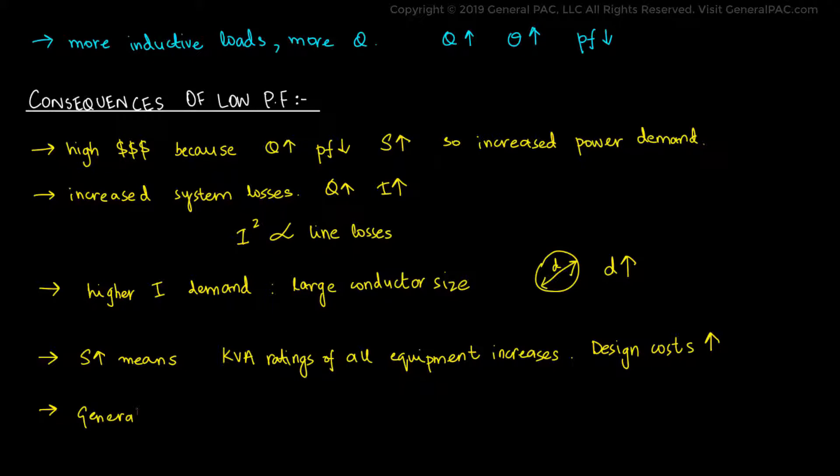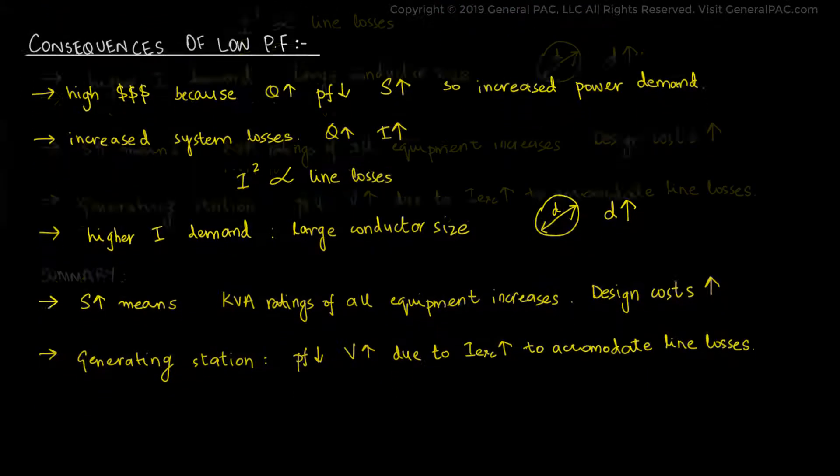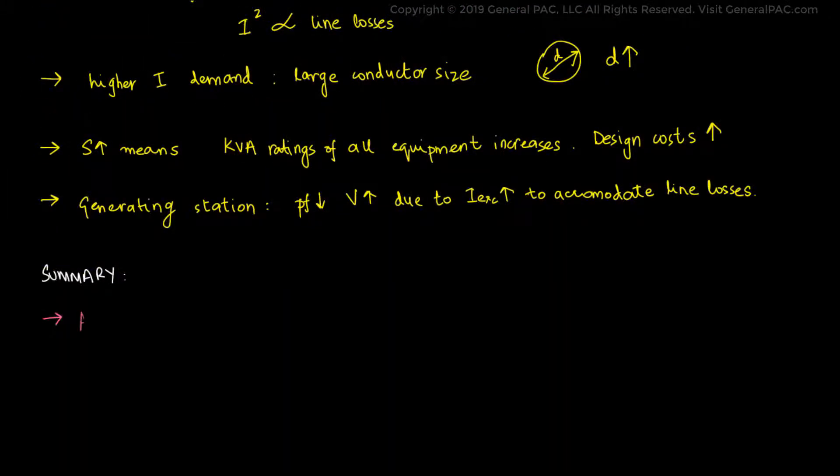If we consider a generation station instead, then a low power factor would cause higher voltages due to the high amount of excitation current required in the generators to accommodate the additional line losses. To summarize it all, a low power factor can have long term negative effects on a power system and effort should be made to ensure a high power factor.